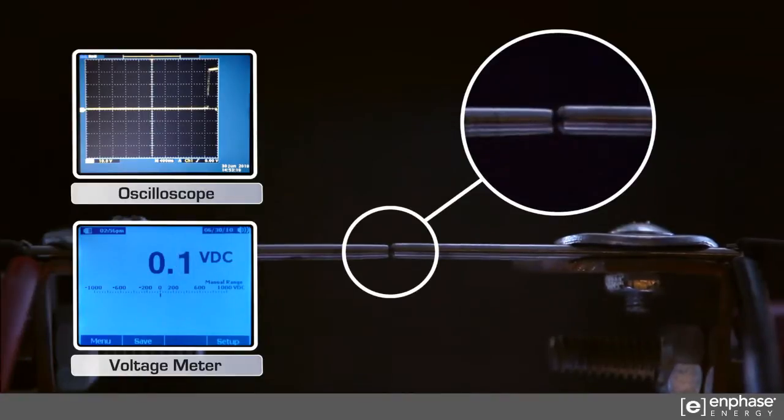As you can see from this scenario, only the smallest of arcs is visible, and for a very brief moment. The nature of a microinverter is that the arc is self-extinguishing.